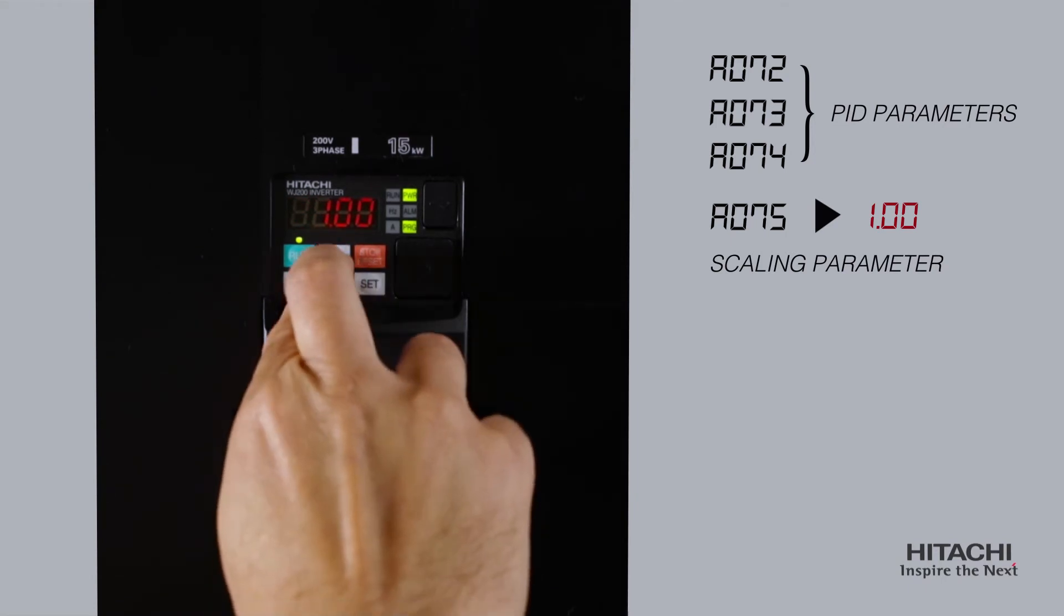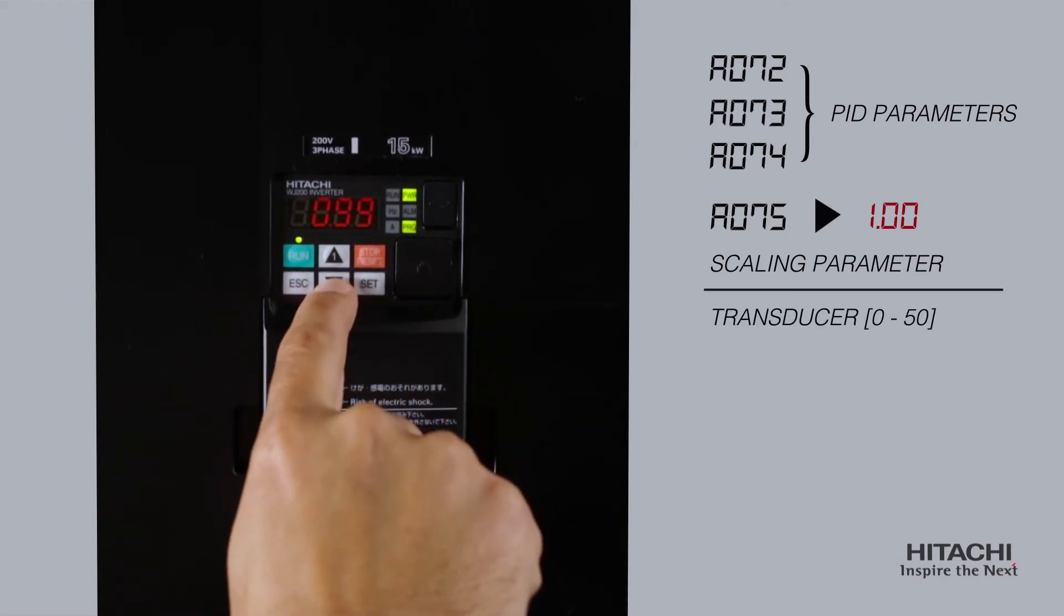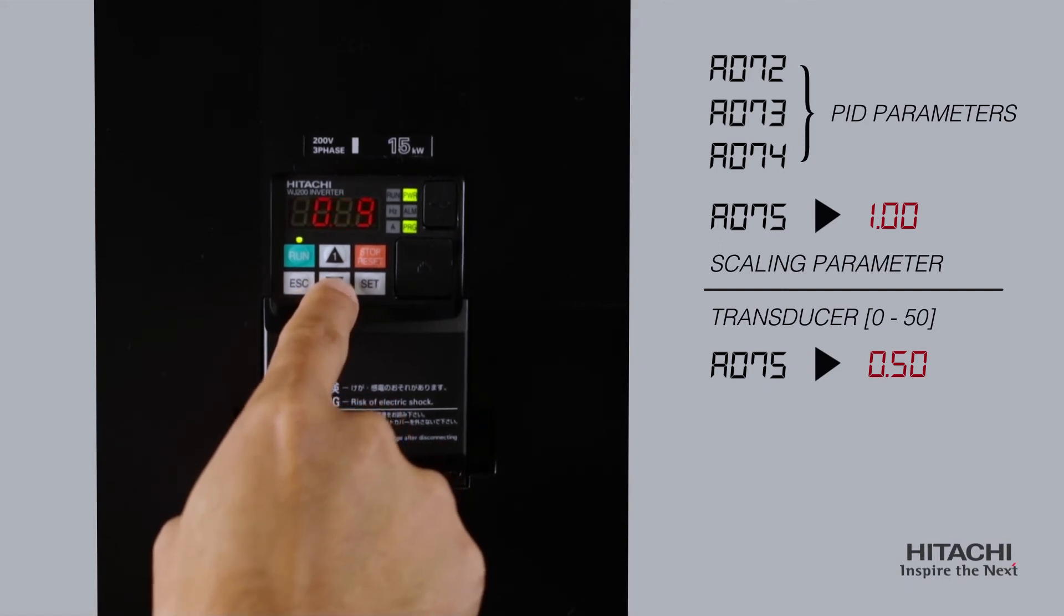Default is 1. If the transducer is 0 to 50, set A75 to 0.5.